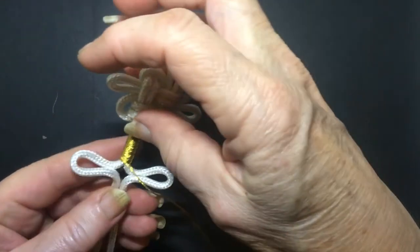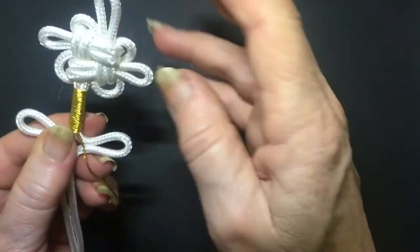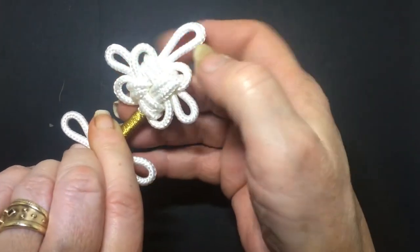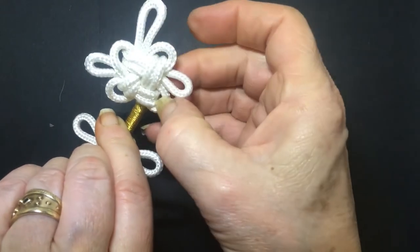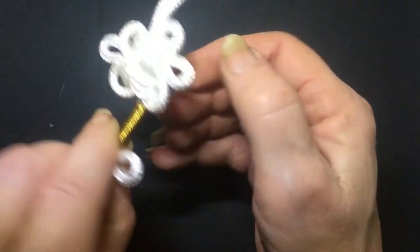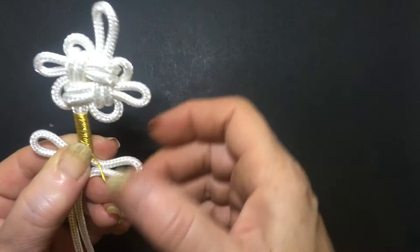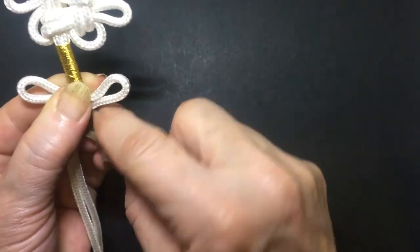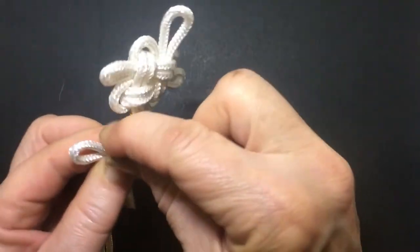Now holding it all in place, take your thread. You have a right side and a wrong side. When you have a look, because the little extra ones are coming out on this side, this is going to be the front of it. So going around the back of it, you're going to go around this three times.